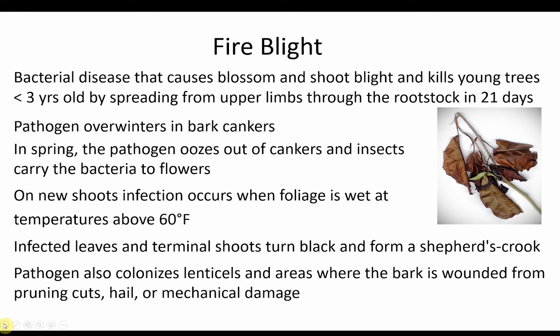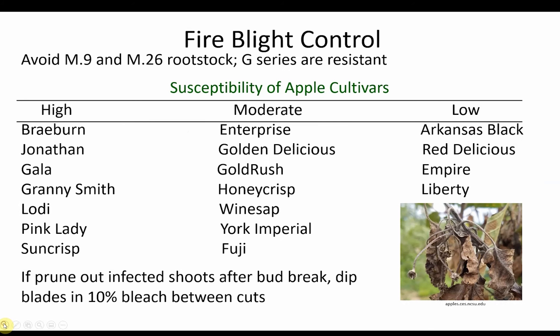Bacteria can enter shoots through lenticel cells, which are small openings on the shoot's surface. The pathogen can also invade the plant through open wounds from pruning cuts, hail, or mechanical damage. One of the best ways to avoid fire blight is to grow an apple cultivar that is less susceptible to this disease. Braeburn, Jonathan, Gala, and Granny Smith are highly susceptible to fire blight, while Arkansas Black, Red Delicious, Empire, and Liberty have low susceptibility. In our experience, some of the high tannin cultivars used for hard cider are very susceptible to fire blight when environmental conditions are optimum for infection.